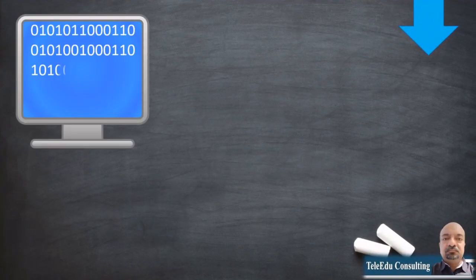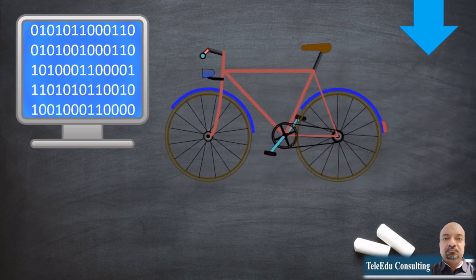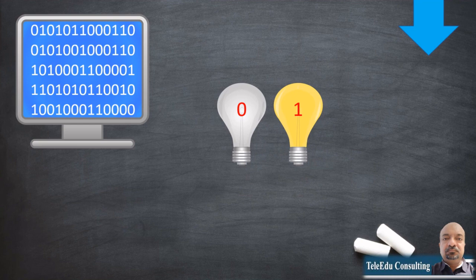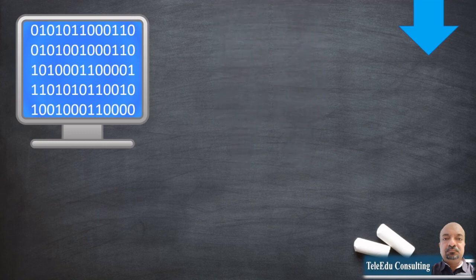Now the computer understands only two values: 0 and 1. Like a cycle has two wheels and we call it a bicycle, similarly we name the two values of 0s and 1s as the binary system — derived from the Latin word 'binarius' meaning the two together. The individual value of 0 or 1 is called a bit. Different combinations of 0s and 1s represent different decimal numbers, English alphabets and characters. Consider the combination 1 1 0 1. It can be understood in the same manner as we learnt in the decimal format, except the base 10 is replaced with base 2, as there are only two possible states: 0 and 1.